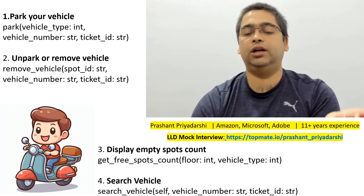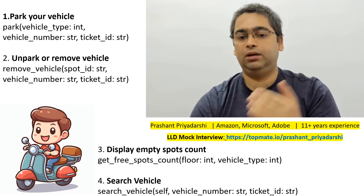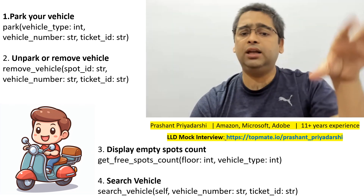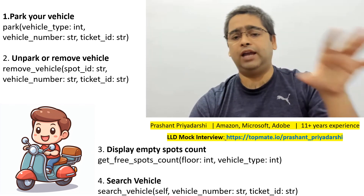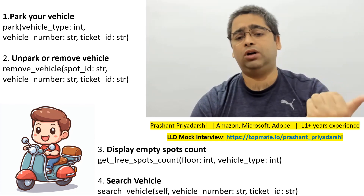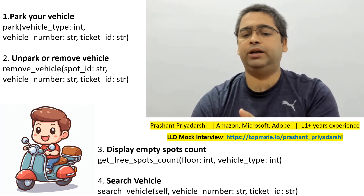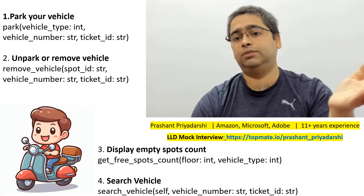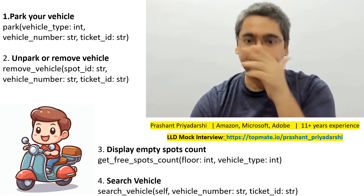If they have their ticket they can provide the spot ID; if they've lost the ticket, they provide only their vehicle number and you search the system and remove their vehicle. Generally in parking lots you'll see a display board on each floor showing the number of free spots for each vehicle type, so we need to implement that functionality. We also need a search vehicle feature — given a vehicle number or ticket ID, tell at which spot the vehicle is currently parked or was parked previously.